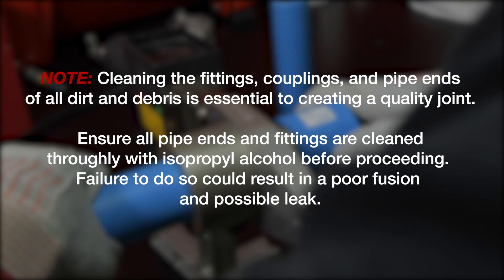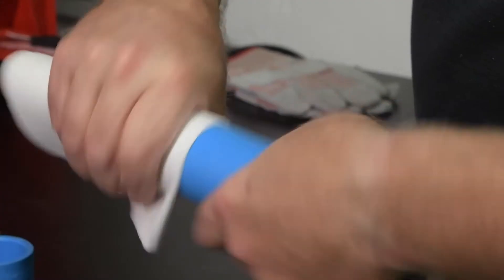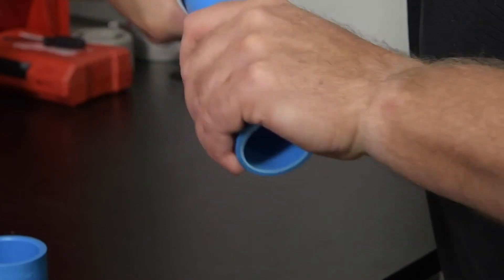Note: cleaning the fitting and pipe ends of all dirt and debris is essential to creating a quality joint. Ensure all pipe ends and fittings are cleaned thoroughly with isopropyl alcohol before proceeding. Failure to do so could result in a leak. Clean the pipe and socket ends with 90% isopropyl alcohol to remove any dirt or debris.